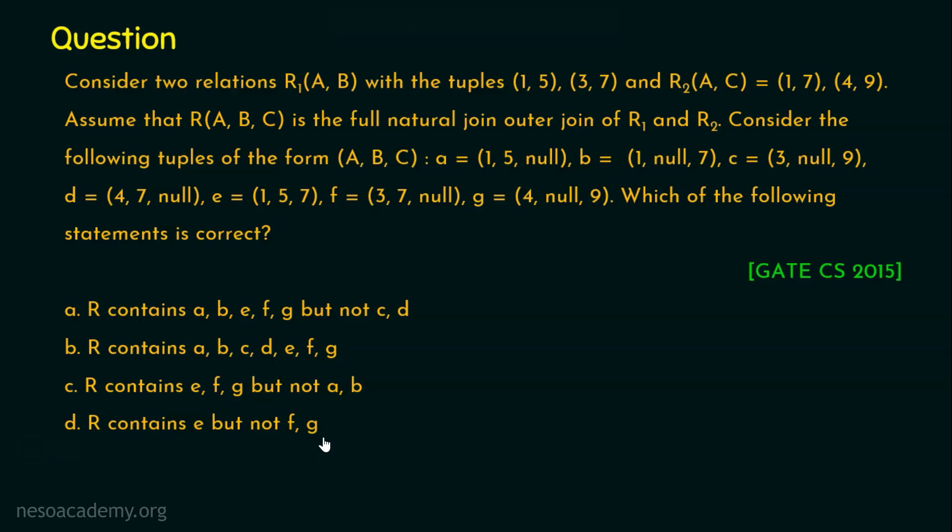I hope you are done. Now let's keenly analyze the question. Let's highlight the important things. There are a few pieces of information given which are important: relation R1 with attributes A, B; relation R2 with attributes A and C; and this output relation R is actually the full natural outer join of relation R1 and R2.